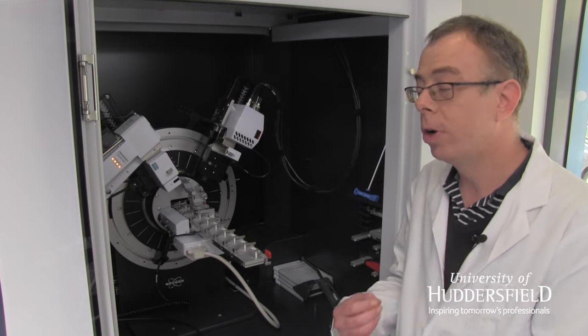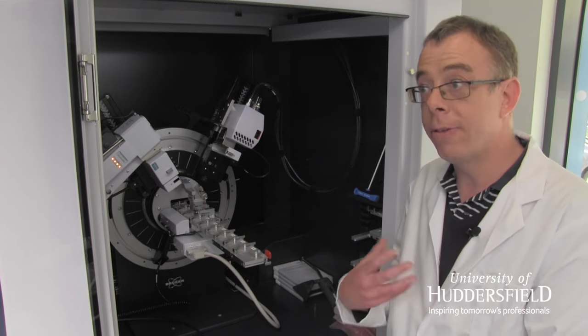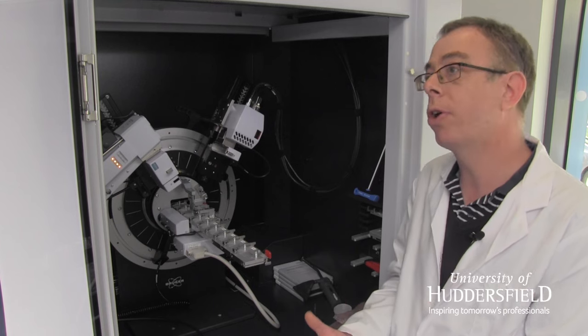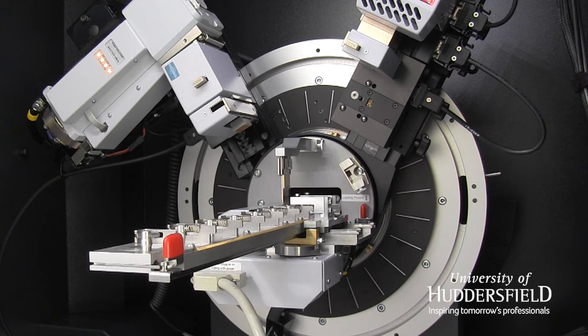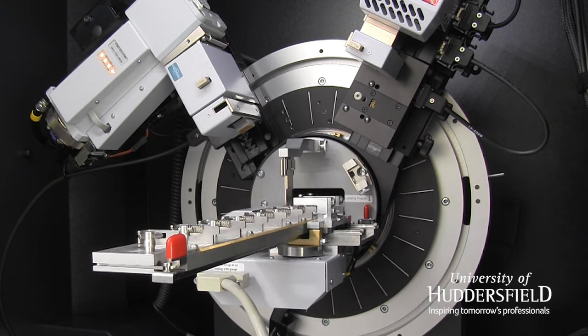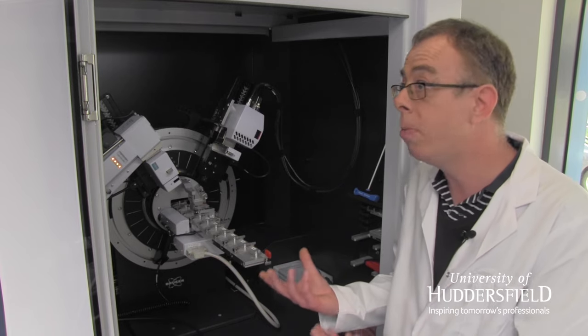The other machine before was a crystal diffractometer, and that gives us a lot of information, but you've got to grow the crystals and that can be tough. This is a powder diffractometer, so you don't need that crystalline sample. A lot of things don't form crystals. A lot of new materials don't.